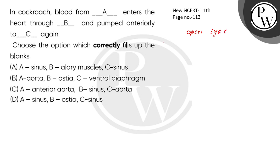In an open type blood vascular system, blood vessels are poorly developed and open into spaces which we call the hemocoel. The blood itself is called hemolymph.